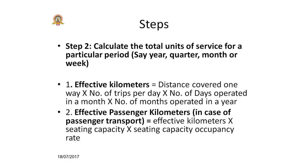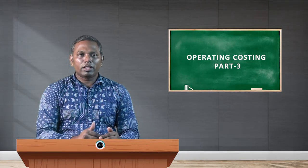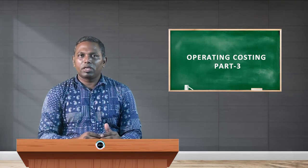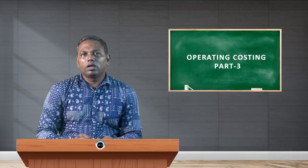If you want to club two things — passenger and kilometer — you go for the composite cost unit. Effective passenger kilometers are calculated as: effective kilometers multiplied by seating capacity multiplied by occupancy rate. If the company is carrying goods instead of passengers, you calculate composite ton-kilometers as: total kilometers multiplied by total capacity in tons multiplied by capacity occupancy rate.